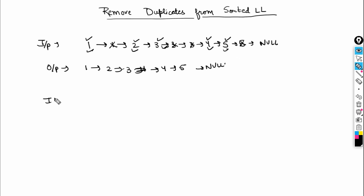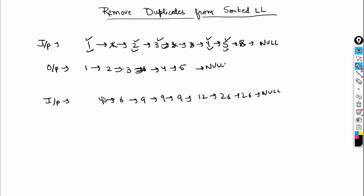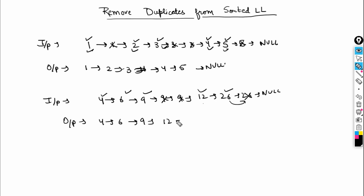Let's see another example. This list is: 4, 6, 9, 9, 12, 26, 26. We need to remove duplicate elements. 4, 6 are okay; the second 9 is a duplicate so remove it; 12 is okay; 26 appears twice so the second is a duplicate. The output should be 4, 6, 9, 12, and 26 — a list with no duplicate elements.